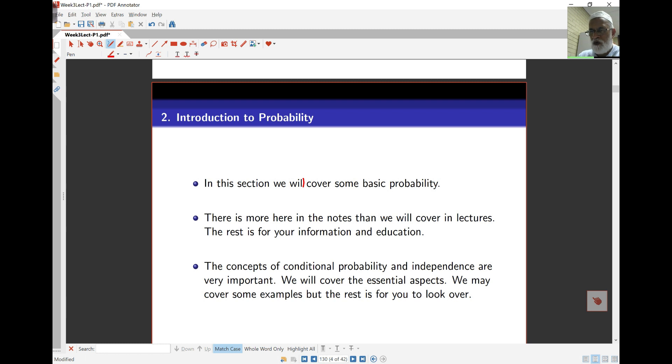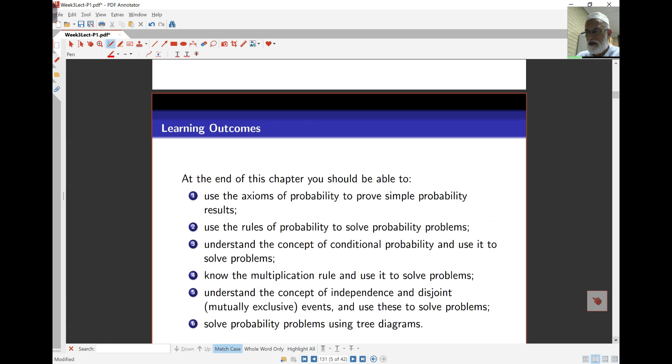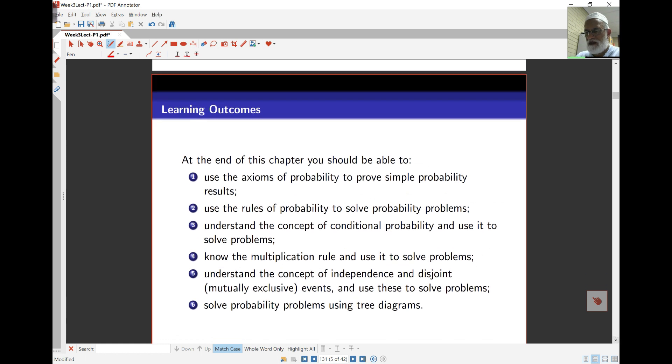There are some important concepts here. In particular, conditional probability and independence are very important concepts in probability and statistics. Here are some things you should know by the end of the chapter, though this is very broad. Understanding what probabilities are about and how things like the multiplication rule and conditional probability work will be important.